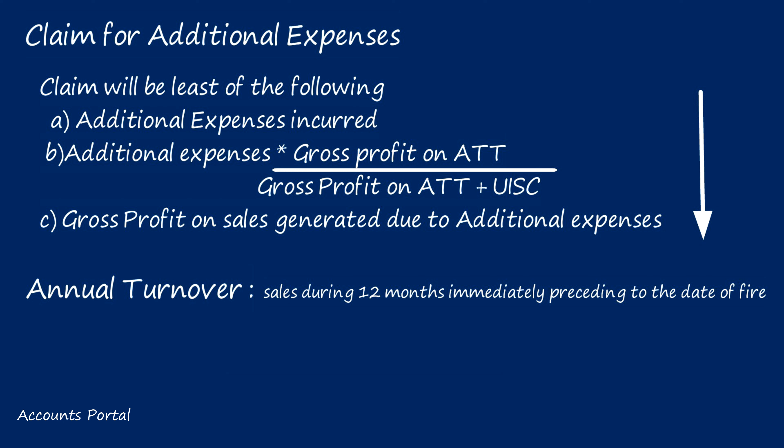For example, if a fire occurred on 1st May 2022 and I want the Adjusted Annual Turnover, I should take 12 months immediately preceding the date of fire — that is, from 1st May 2021 to 30th April 2022.